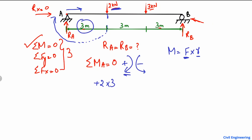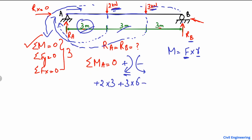The second load of 3 kilonewtons also acts downward and creates a clockwise moment about point A, so it is also positive: plus 3 multiplied by its moment arm, which is 3 plus 3 equals 6 meters. The reaction RB acts upward and creates an anticlockwise moment about point A, so it is negative: minus RB multiplied by its moment arm, which is the total span of 3 plus 3 plus 3 equals 9 meters. Setting the summation of all moments about point A equal to zero gives us the full equation.